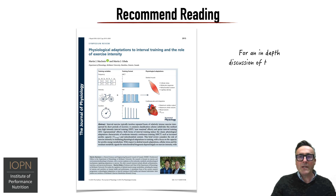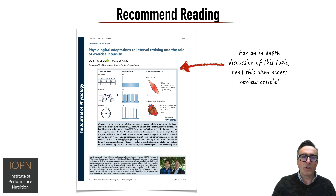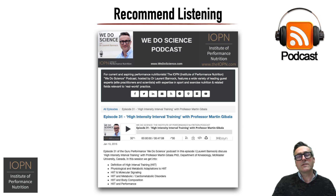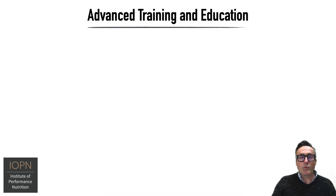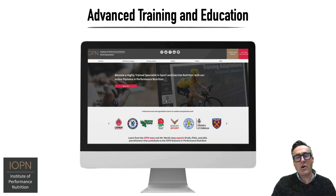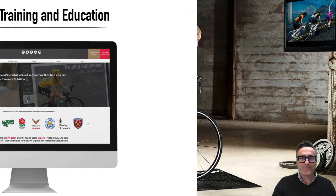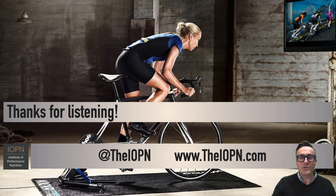As always, I recommend you read deeper into this topic. Specifically, I recommend this open access paper on physiological adaptations to interval training and the role of exercise intensity, which is an excellent overview by Martin McInnes and Professor Martin Gibala. I also recommend you listen to my podcast on high intensity interval training with Professor Martin Gibala. If you want to access that podcast, all other podcasts, our videos in this series, and learn about our online training and development programs in advanced sport and exercise nutrition, please visit our website at www.theiopn.com. If you like this video, please subscribe and like it on YouTube. Thank you very much for listening — I look forward to bringing another Science to Practice overview to you very soon.